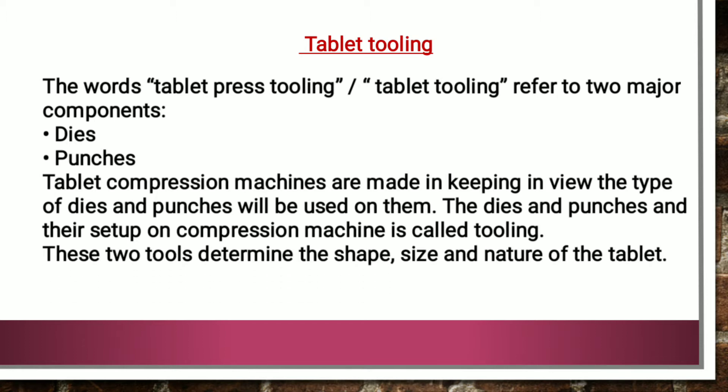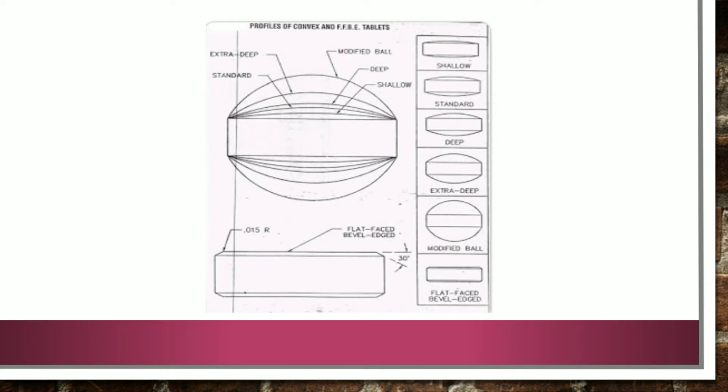Dice and punches are the tools that determine the shape, size, and nature of the tablet. Here you can see different types of punches used for tablet tooling. The first one is the shallow conkyo, which can be used for round or capsule shaped tablets. Then standard conkyo, also used for round or capsule shaped tablets. Then deep conkyo, again for round and capsule shaped. Then extra deep, modified ball, and the last one is flat faced bevel edged.